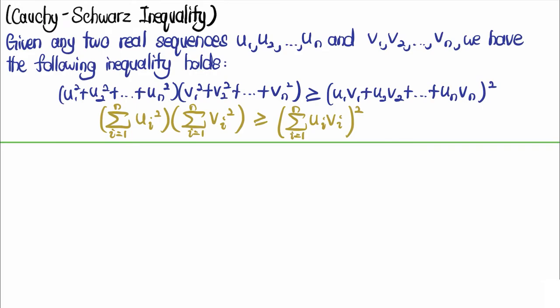Let us explore a nice inequality called the Cauchy-Schwarz inequality, which is a well-known inequality used to prove inequalities asked in math contests and even to solve IMO problems related to inequalities.